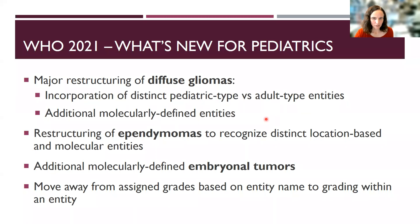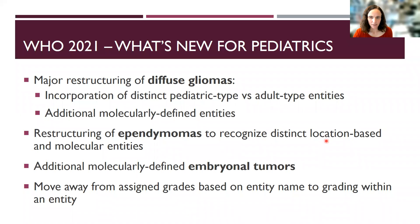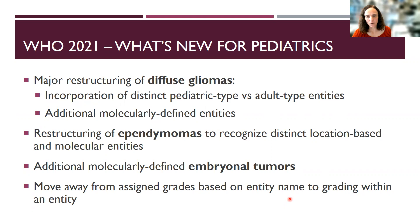In 2021, that trend has continued, and there's been another major restructuring of the diffuse gliomas with incorporation of distinct pediatric type versus adult type entities. There's also been a number of molecularly defined entities added in the glioma spectrum. There has also been a major restructuring of the ependymomas to recognize distinct location-based and molecular entities. There's been additional molecularly defined embryonal tumors added, and an important move away from assigning grades based on entity name to grading within an entity, largely applied to IDH mutant gliomas.